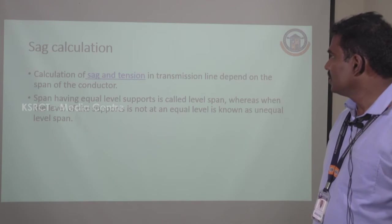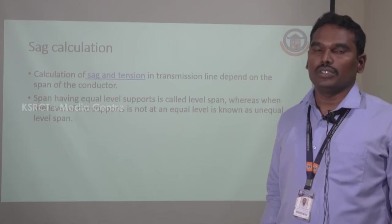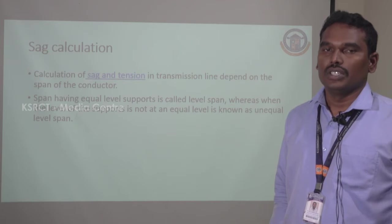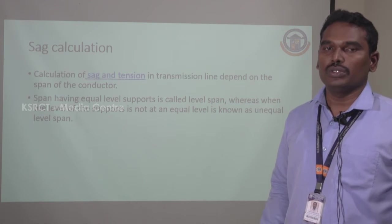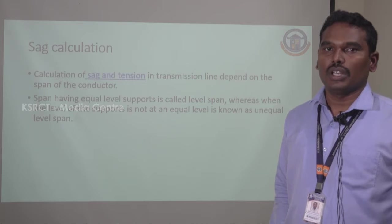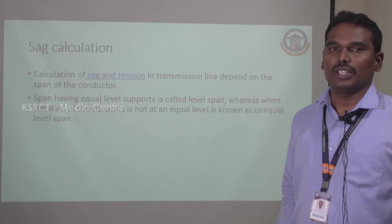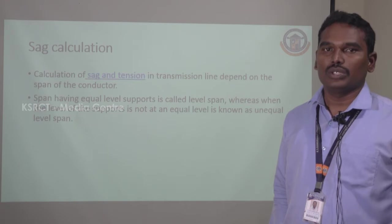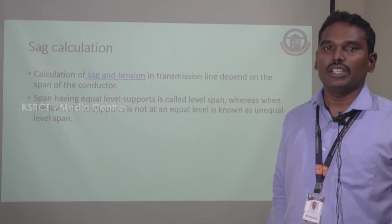SAG is the distance from the lowest point on the conductor to the top portion of the tower, between transmission towers A and B. We need to calculate SAG because if the SAG length is very high, there will be more voltage drop in the transmission system. Also, due to high wind velocity, there is a possibility of conductors being short-circuited. We have to calculate the SAG, tower-to-tower distance, and weight of the conductor to design a proper transmission system.